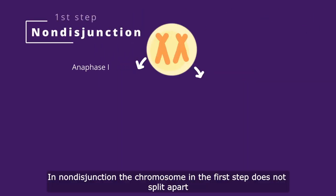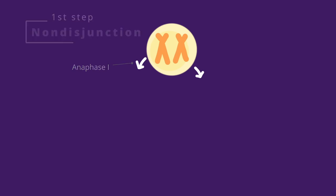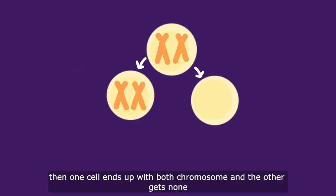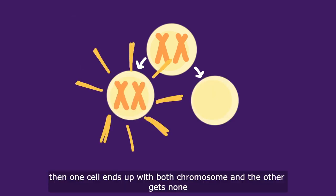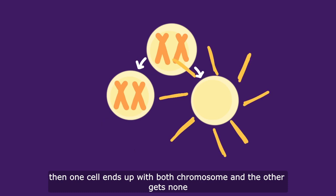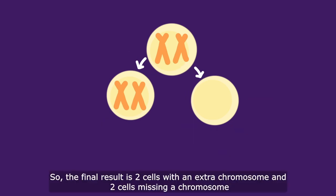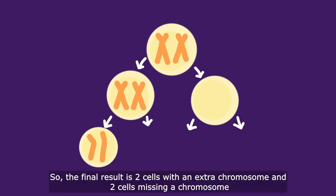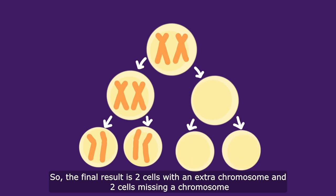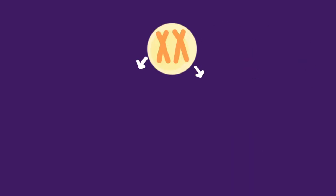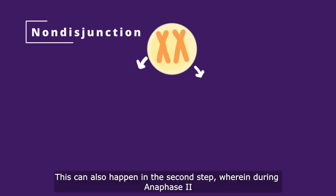In non-disjunction, the chromosome in the first step does not split apart. One cell ends up with both chromosomes and the other gets none. The final result is two cells with an extra chromosome and two cells missing a chromosome.